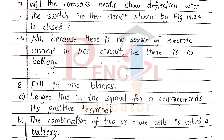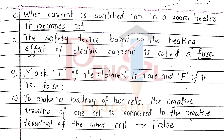Eighth one, fill in the blanks. A. Longer line in the symbol for a cell represents its positive terminal. B. The combination of two or more cells is called a battery. C. When current is switched on in a room heater, it becomes hot. D. The safety device based on the heating effect of electric current is called a fuse.